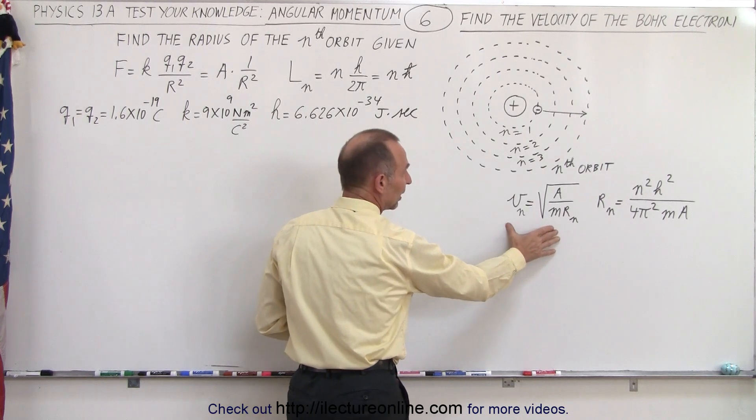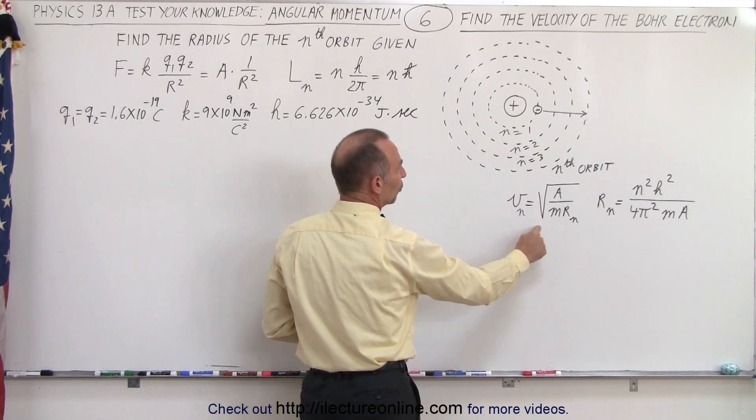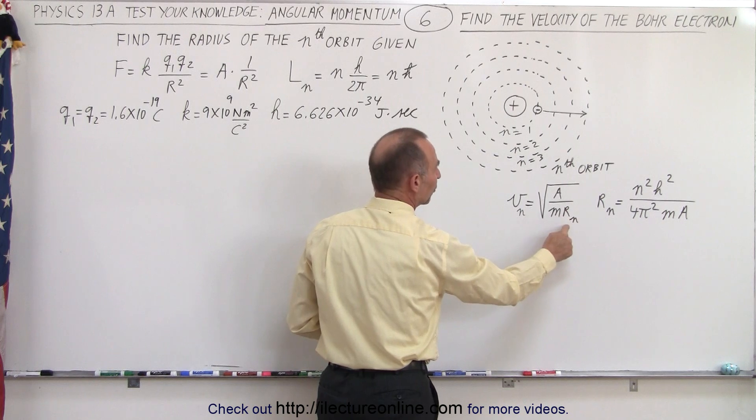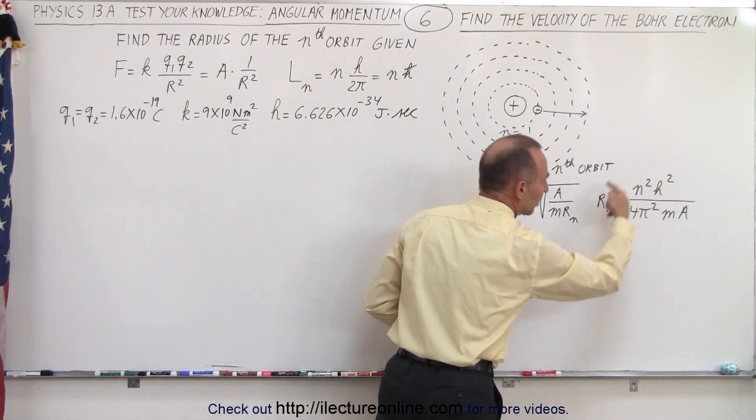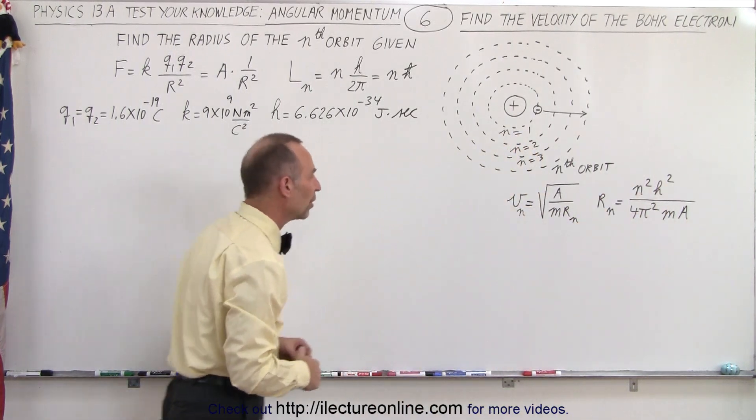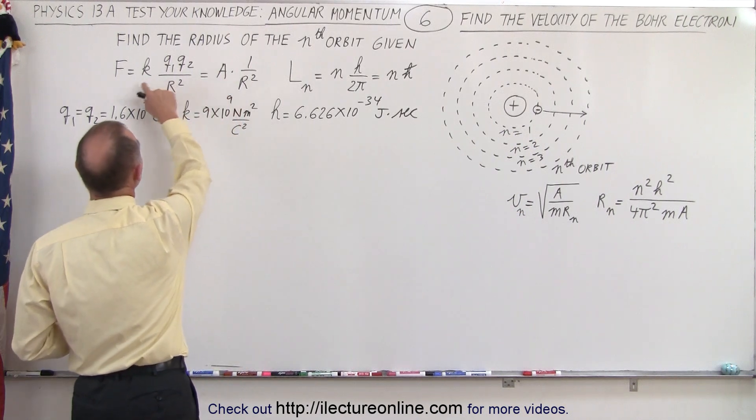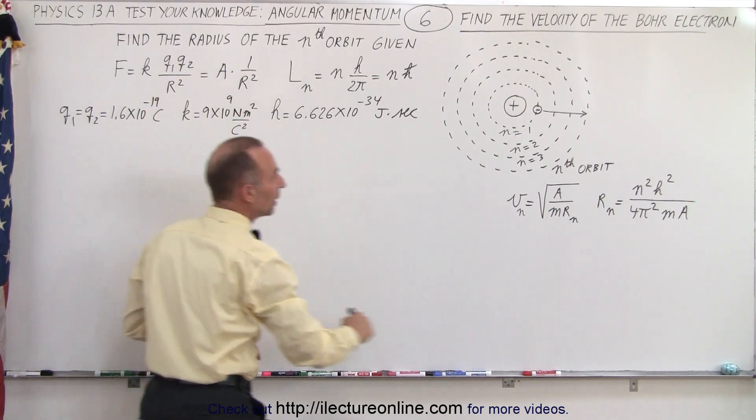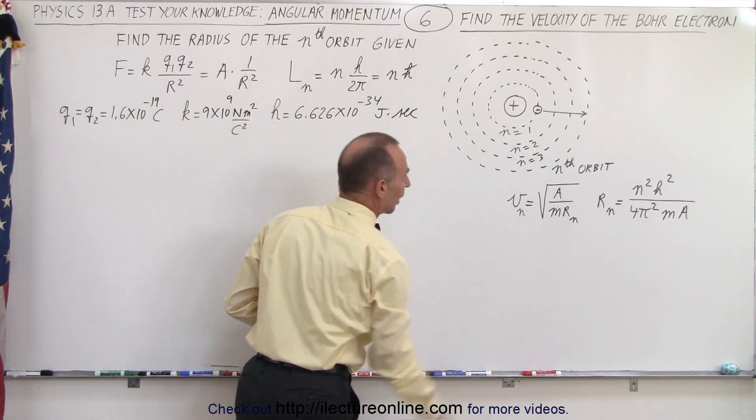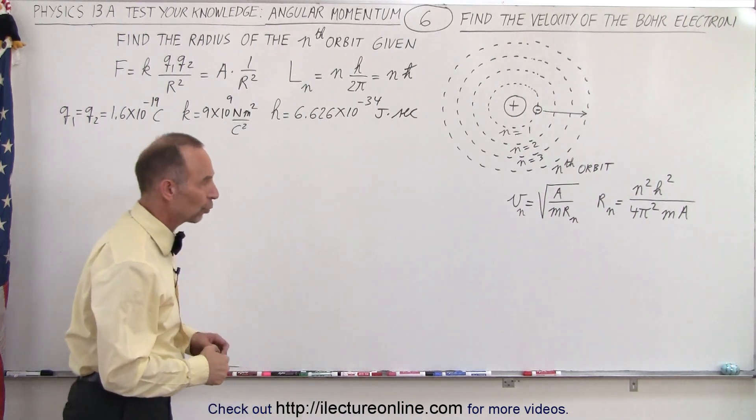We found that the velocity of the nth orbit was equal to the square root of a over m times r sub n, where r sub n was the radius that we found in the previous video. a, of course, is equal to k q1 times q2, m is the mass of the electron, and r sub n is the radius of the nth orbit.